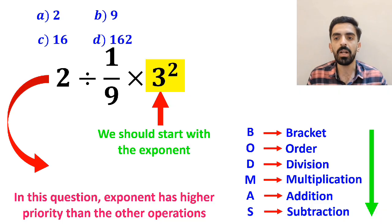So, instead of the original expression, we can write 2 divided by 1 over 9 times 9.